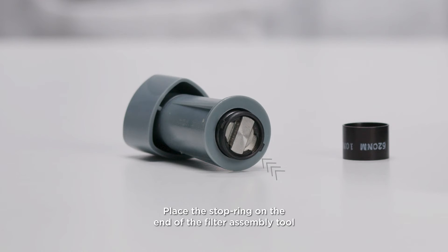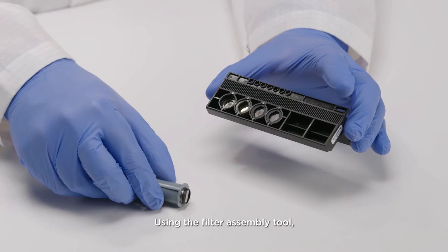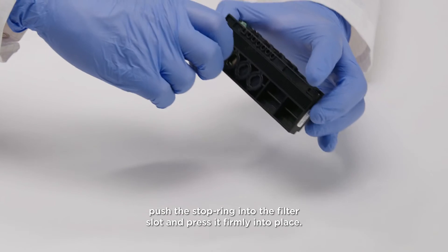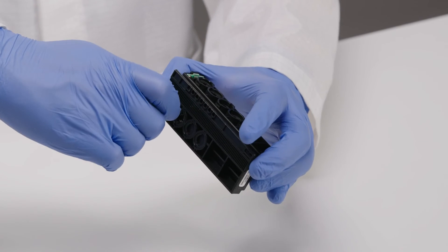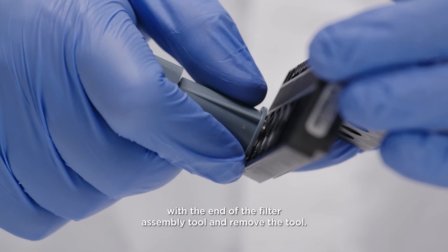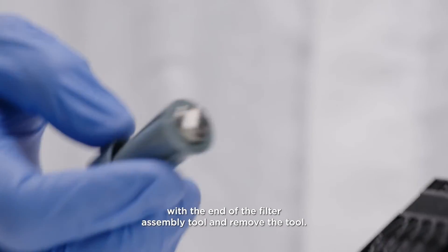Place the stop ring on the end of the filter assembly tool and turn it so it cannot slip off. Using the filter assembly tool, push the stop ring into the filter slot and press it firmly into place. Rotate the tool until the notch in the stop ring is aligned with the end of the filter assembly tool and remove the tool.